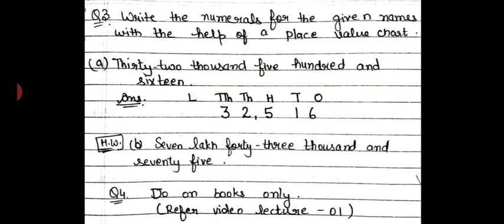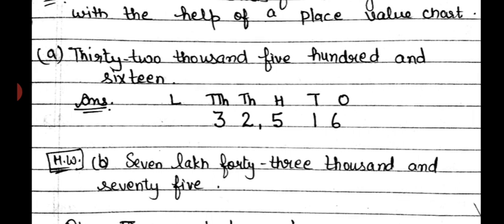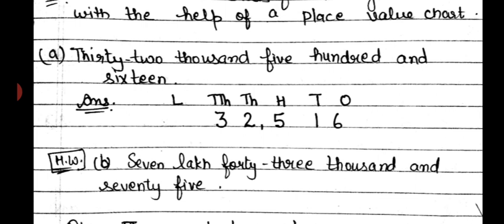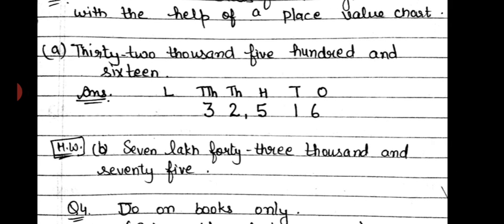Question number 3: write the numerals for the given names with the help of a place value chart. The number name given is 32,516. First step is to write the places: ones, tens, hundreds, thousands, ten thousands, and lakhs. I will write 3 under the ten thousands place and 2 under the thousands place, 5 under the hundreds place, and then 1 and 6 — meaning only the ones and tens places are used for 16. The B part you will do in your notebooks yourself.